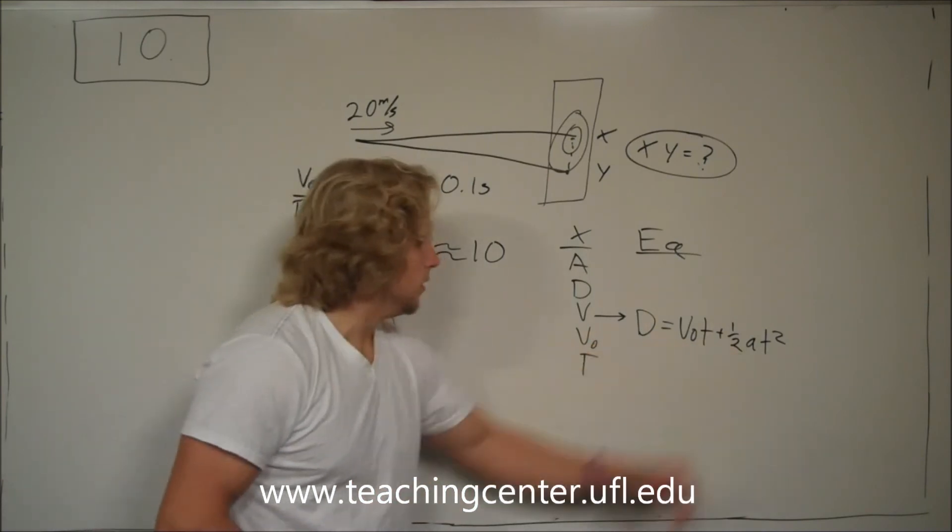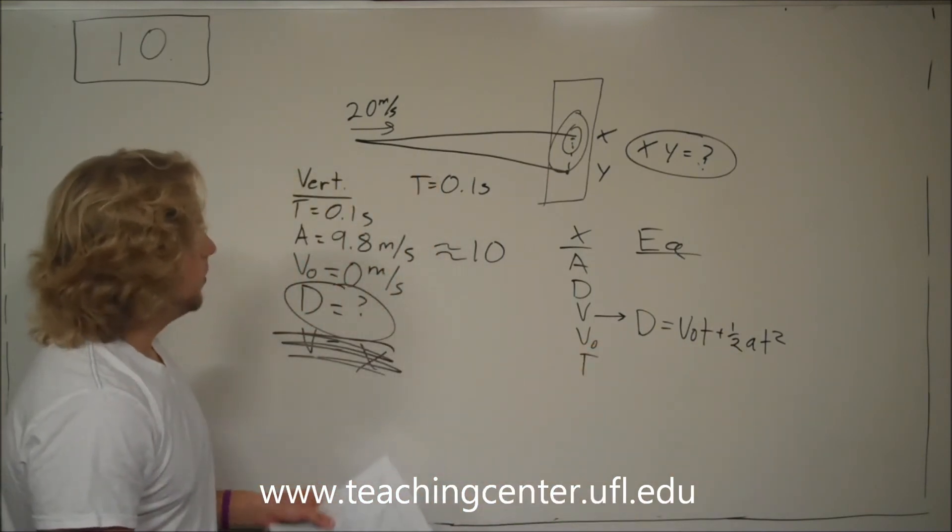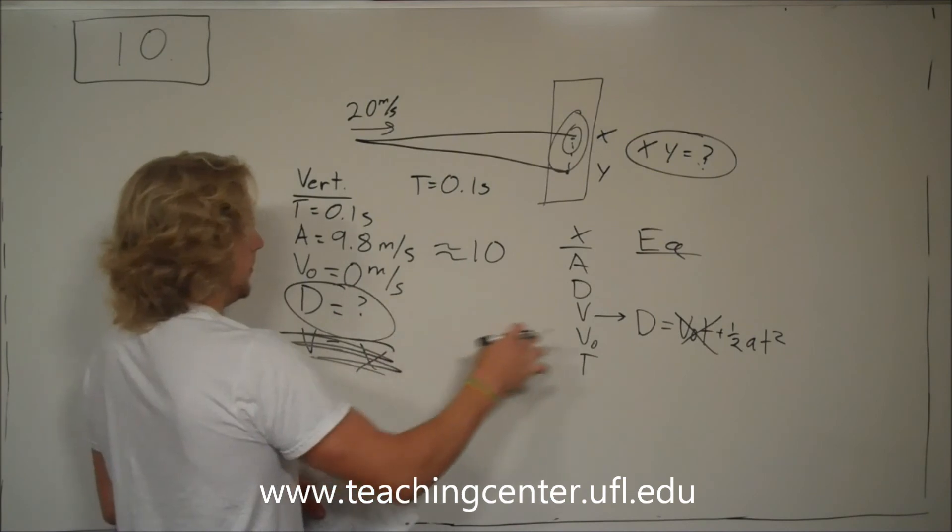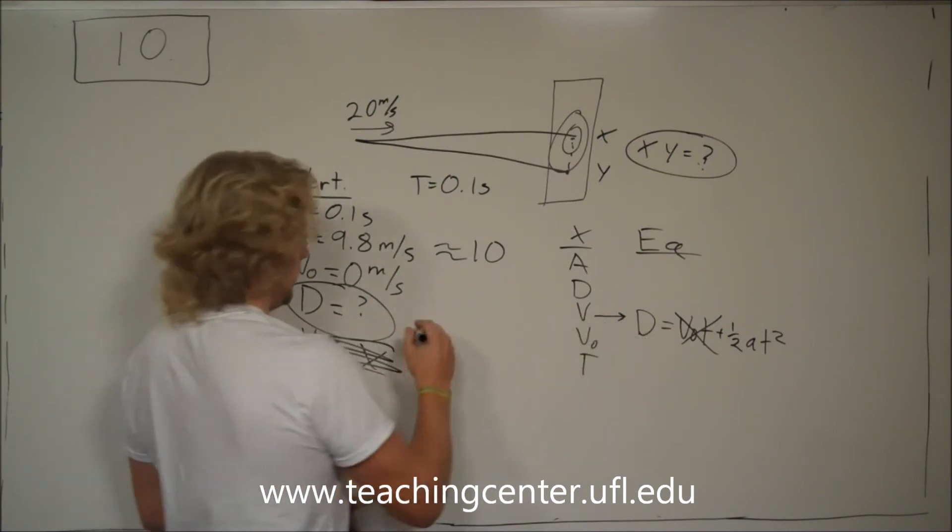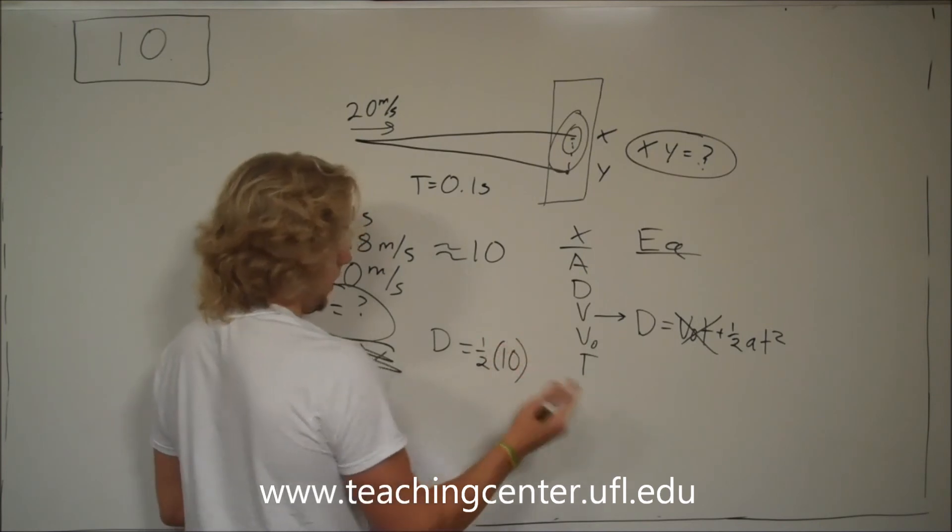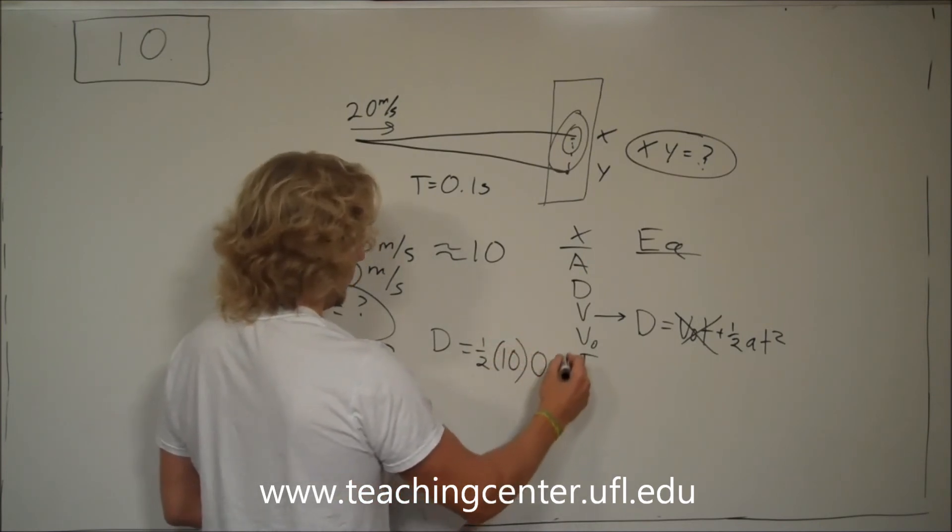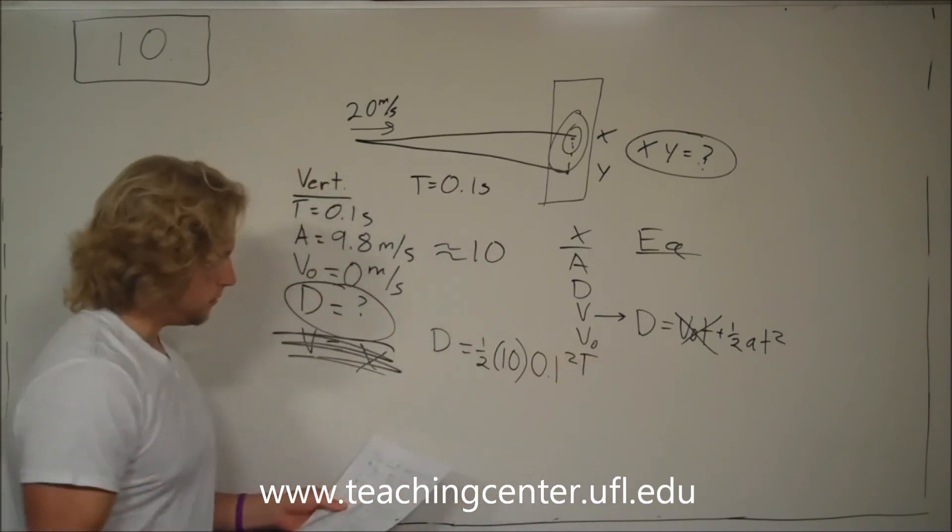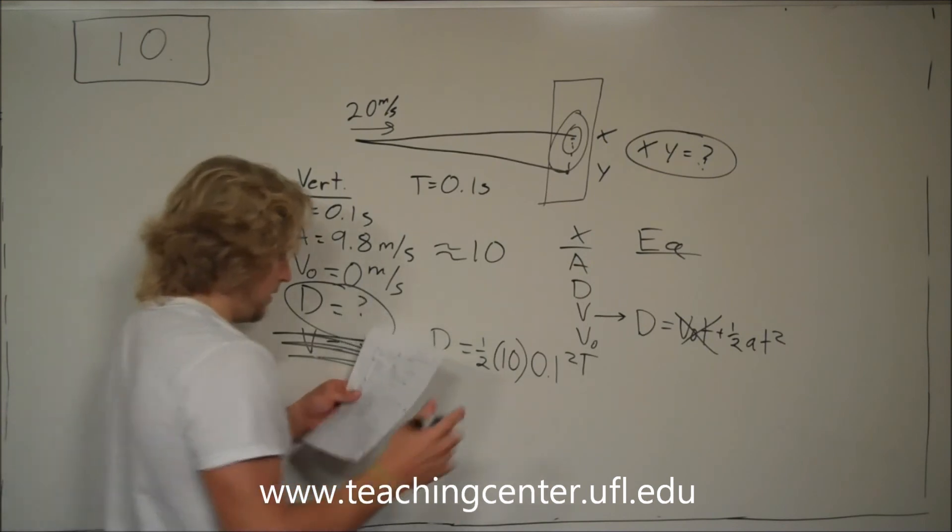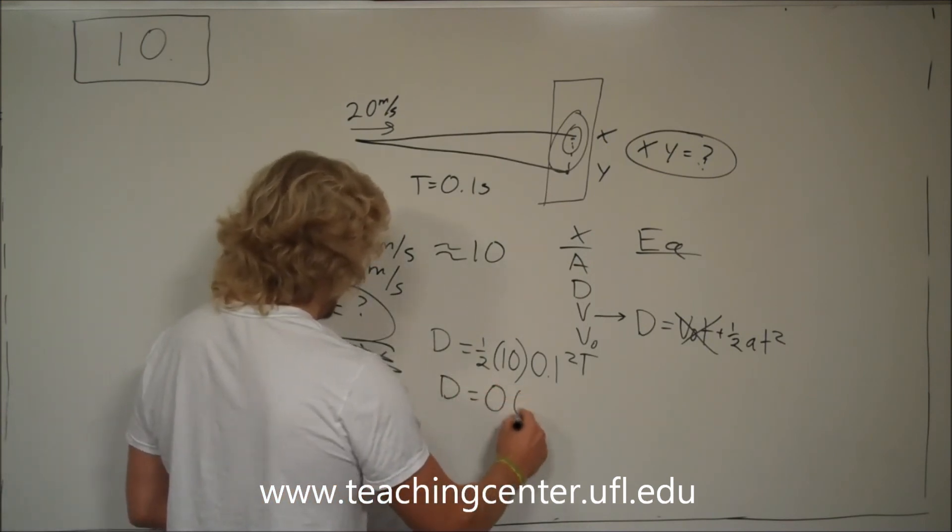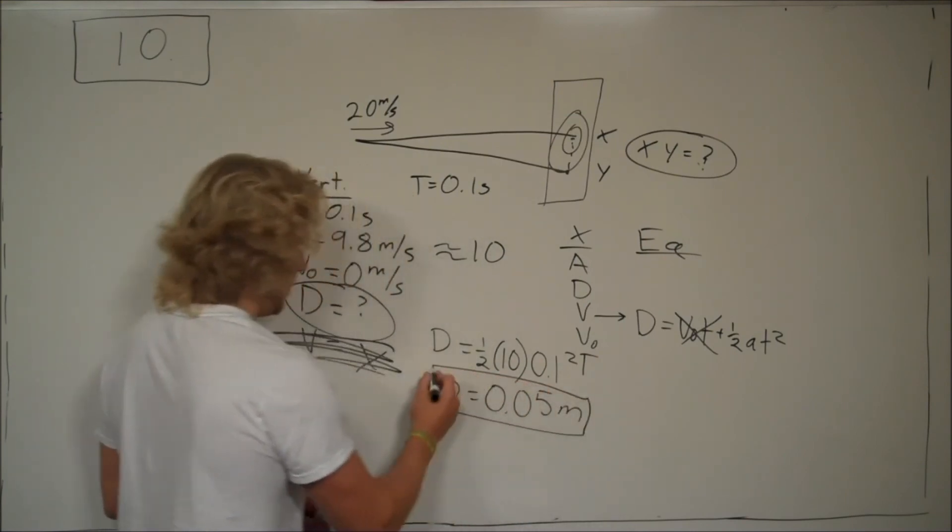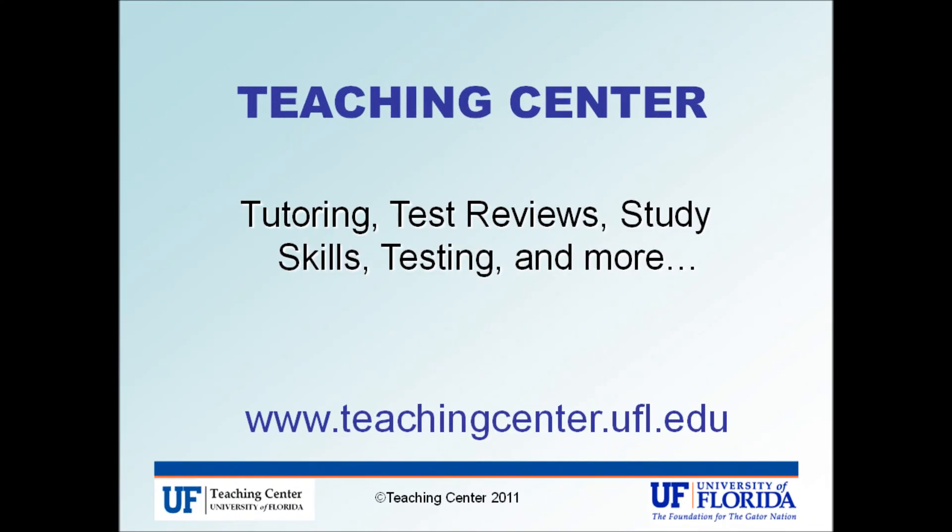There's no v in there at all. So, we'll just go ahead and plug in what we know. v-naught is zero. So this goes away. We're looking for d. So, d is equal to one-half, ten, about ten, times t, 0.1, squared. That's the equation I used. And it turns out that you end up finding that d is equal to about 0.05 meters. That's your answer.